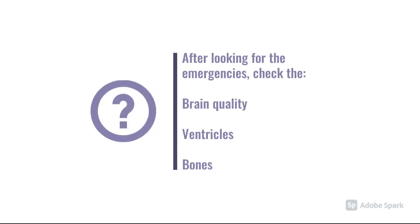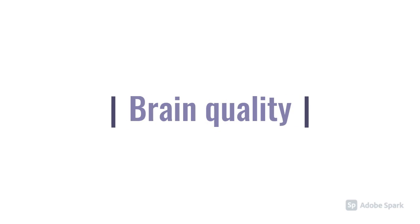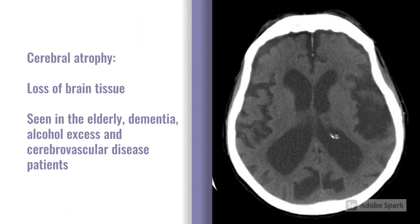After exploring those two big questions — is there any blood, and is the middle in the middle — there are other things we need to look at: brain quality, the ventricles, and the bones. In terms of brain quality, cerebral atrophy is something to look out for. It's common in elderly patients, in patients with dementia, and in patients with alcohol excess — there is just general volume loss. The example also shows quite large ventricles, which we'll come on to talk about later.